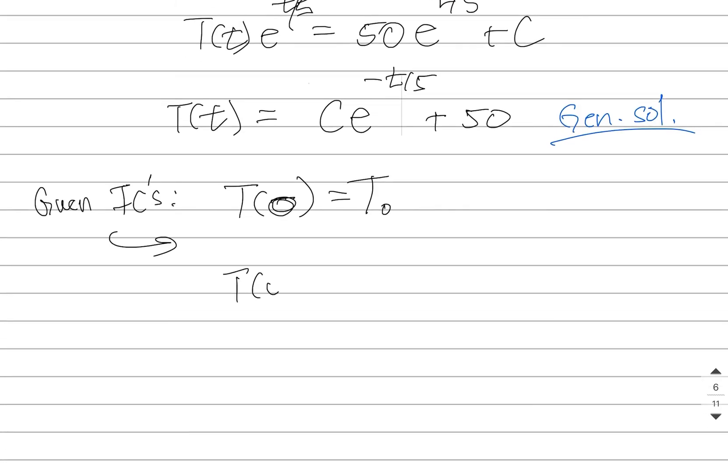So T(0) is going to be 50 + ce^0, and that has to be equal to T_0. So that means that this arbitrary constant is going to be T_0 - 50. Sorry, I think I got... that's not a minus. That's a positive. There we go. T_0 - 50.